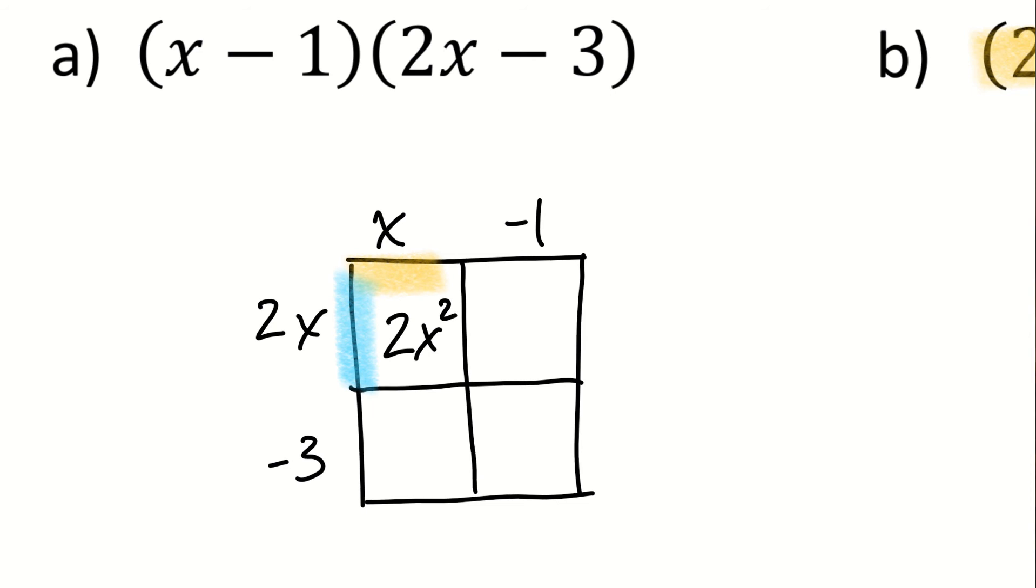When I multiply this negative 1 times the 2x, then blue. Negative 1 times the, I'm getting clever with the colors. Stop it. Negative 1 times 2x is negative 2x.